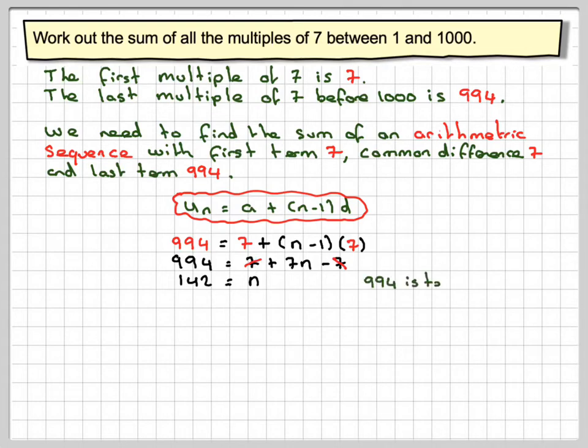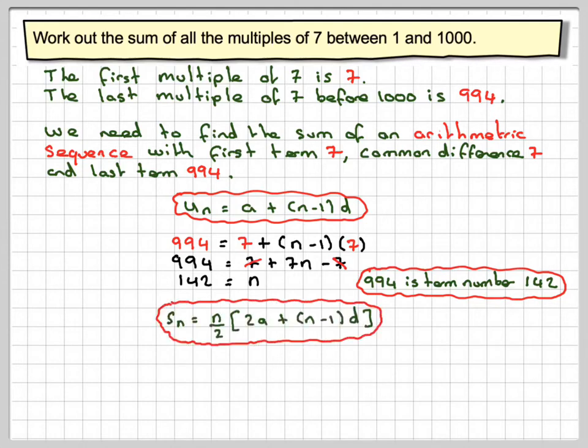Now we need to find, so 994 is term number 142, so we need to find the sum of the first 142 terms.